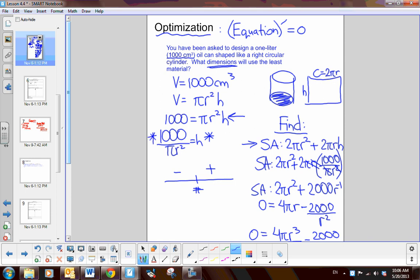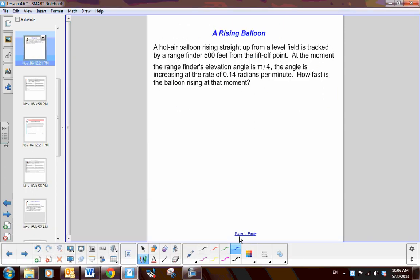So, optimization is write an equation of one variable, take the derivative, and set it equal to zero. Now, related rates is basically the same idea.